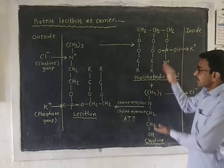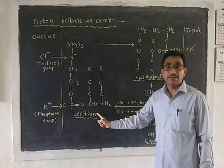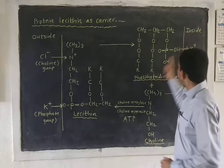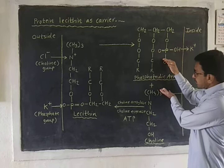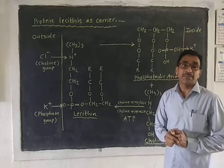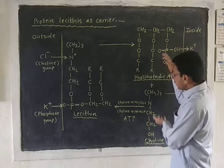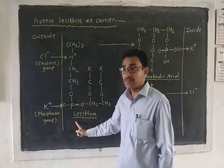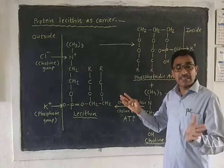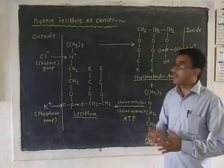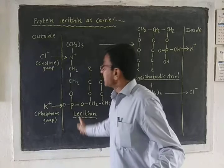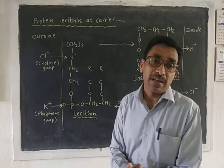Then phosphatidic acid and choline combine with each other and form lecithin again, with the help of the enzyme choline acylase and choline esterase, using ATP energy. Again this lecithin picks up ions, moves to the inner surface of the cell, dissociates, and releases cations and anions into the protoplasm. In this way cations and anions are carried repeatedly by the lecithin, hence it is called Protein Lecithin as Carrier.